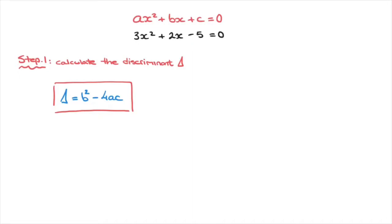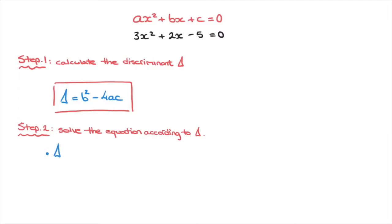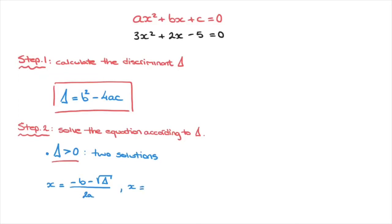Once the discriminant has been calculated, we move on to step 2, where we solve the quadratic equation. The way in which we solve it and the solutions it may have depends on the sign of the discriminant. There are three possible scenarios. First, the discriminant delta can be positive — greater than zero. When this happens, the quadratic equation will have two solutions, given by x equals to negative b minus the square root of delta over 2a, and x equals to negative b plus the square root of delta over 2a.